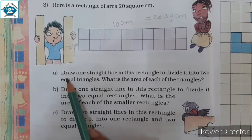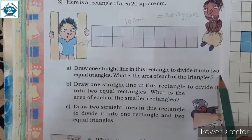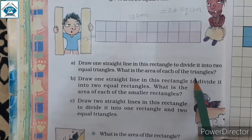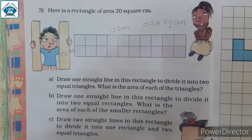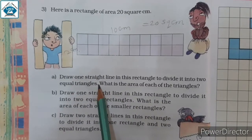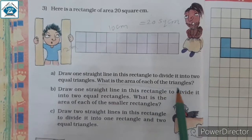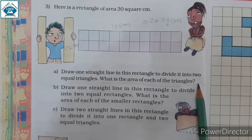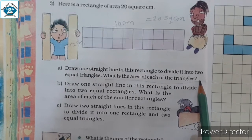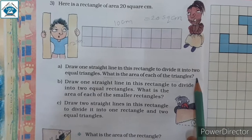A. Draw one straight line in this rectangle to divide it into two equal triangles. What is the area of each of the triangles? We can say that it will be 10 square centimeter, because both triangles will be equal.